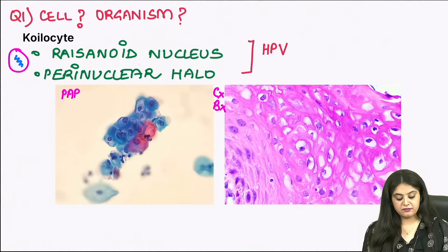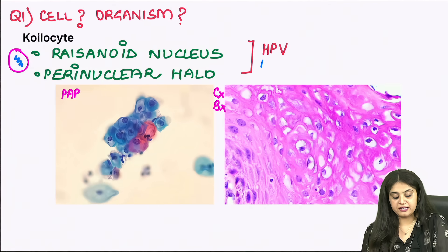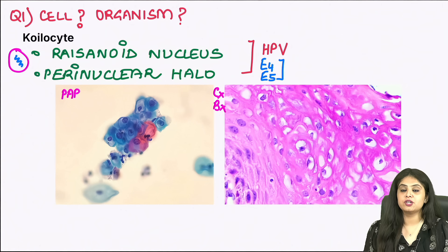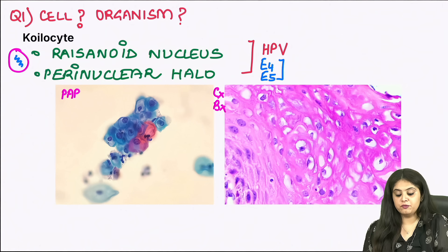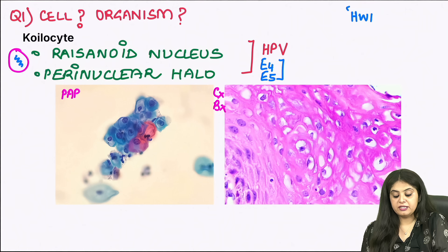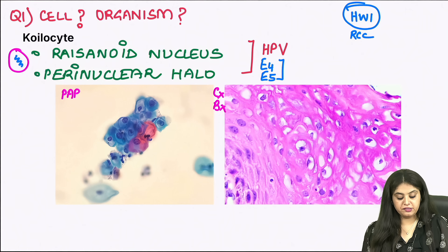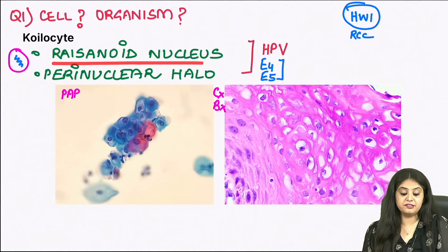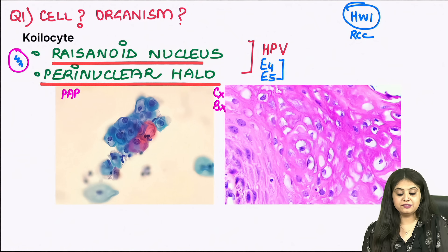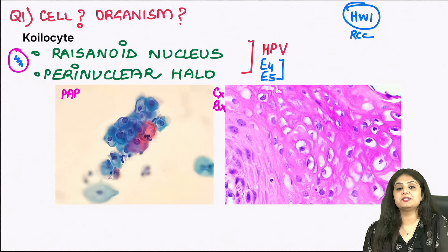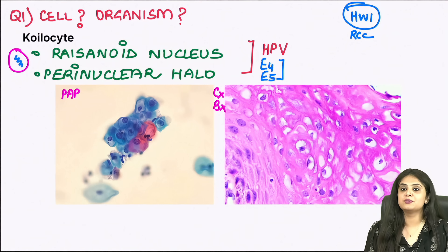Without a doubt, this is caused by the virus human papillomavirus (HPV). It is the E4 and E5 proteins of HPV that are responsible for the koilocytic change. The first homework of today: tell me where else — especially in renal cell carcinoma — you see a cell with the same raisinoid nucleus and perinuclear halo. It is not called a koilocyte in RCC, but something else, and you need to tell me which type of RCC it is seen in.